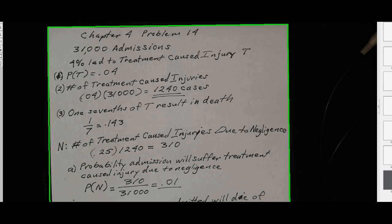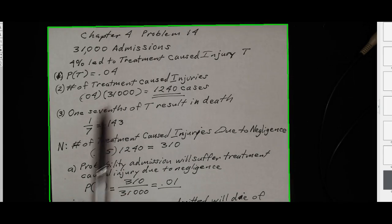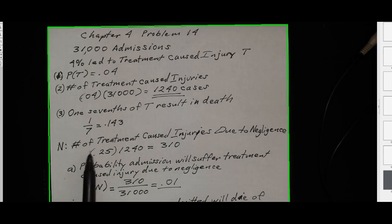So I started out with the 31,000 admissions. 4% of those had treatment caused injury. So the number of treatment caused injuries out of the 31,000 is 1,240, simply multiplying 0.04 times the 31,000. We said one seventh of those resulted in death, so 1 over 7, which is 0.143. I may or may not use that, but I'm just working through the information they gave.